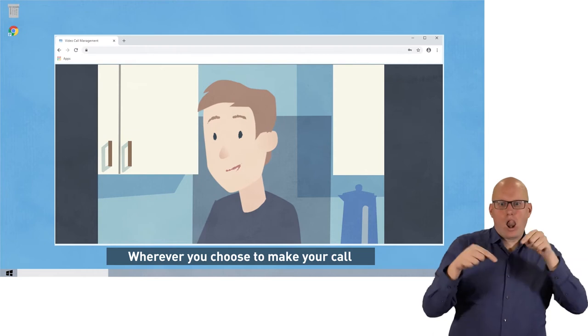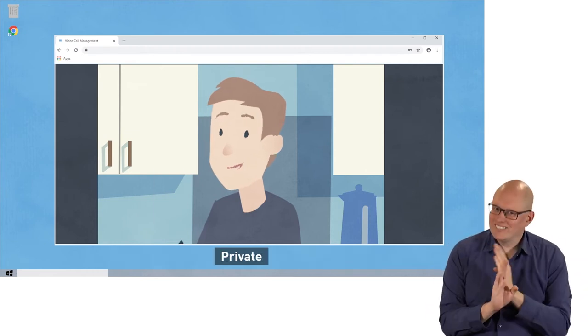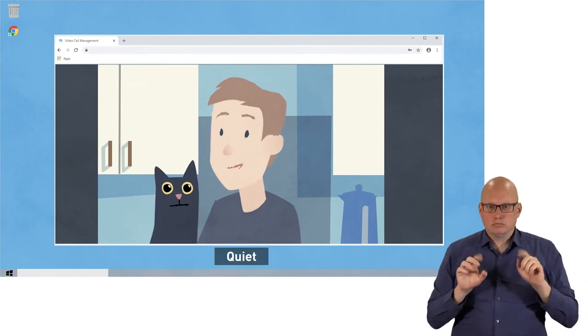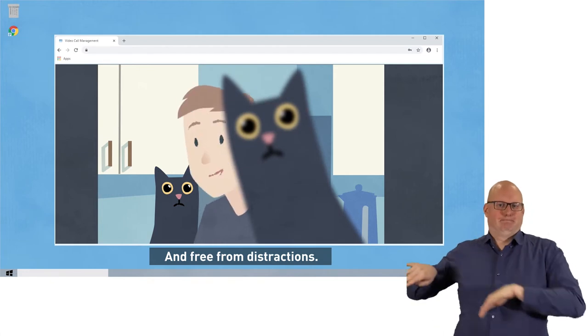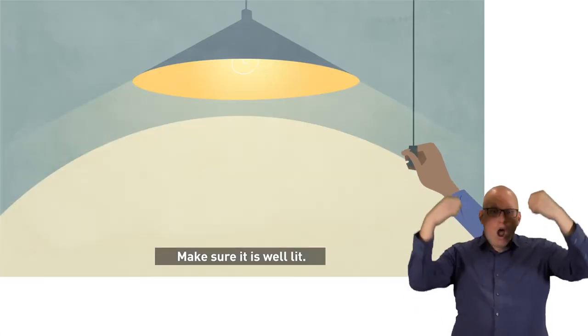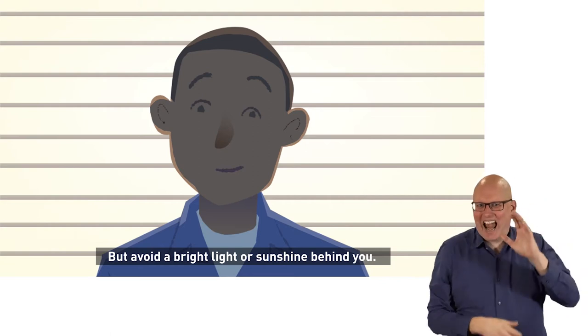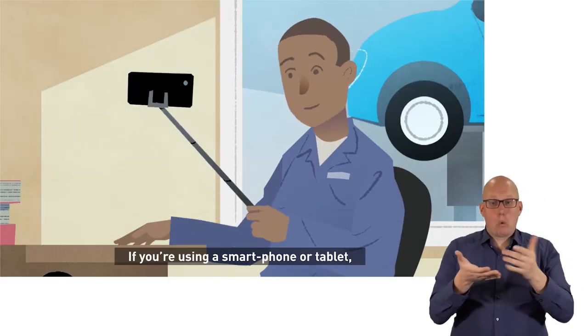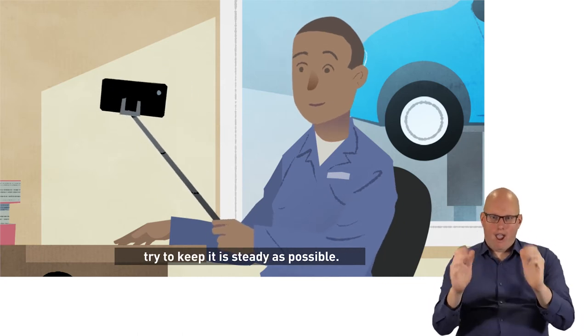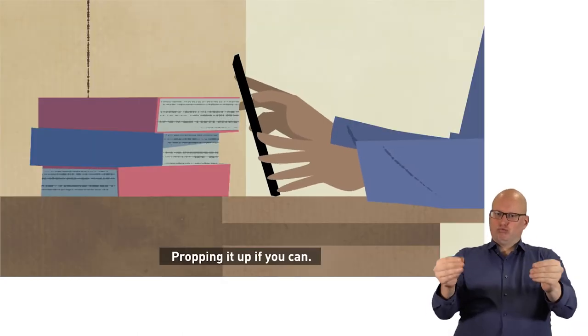Wherever you choose to make your call it will need to be private, quiet and free from distractions. Make sure it is well lit but avoid having a bright light or sunshine behind you. If you're using a smartphone or tablet try to keep it as steady as possible, propping it up if you can.